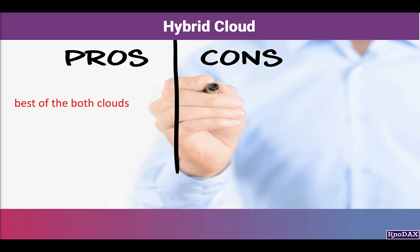Hybrid cloud's main advantage is that you can leverage the best features of both types of clouds. For example, organizations can use private clouds to secure and regulate their data tightly, and then securely move them to public clouds such as AWS to leverage their analytical machine learning services to build actionable insight solutions with cost and time efficiency.